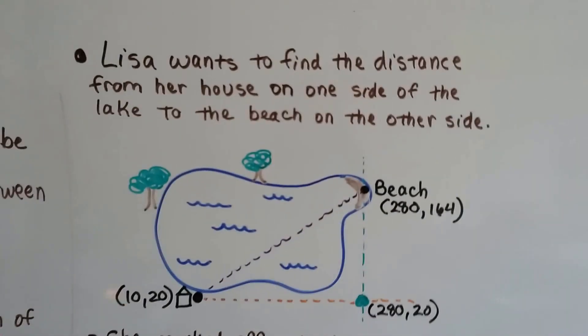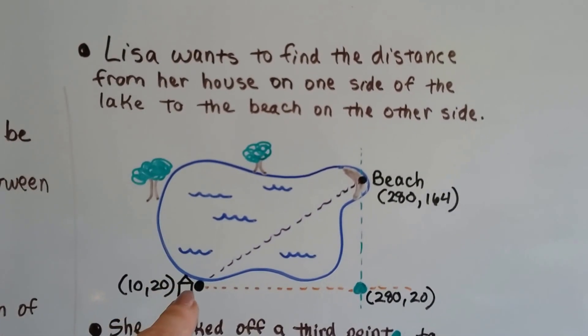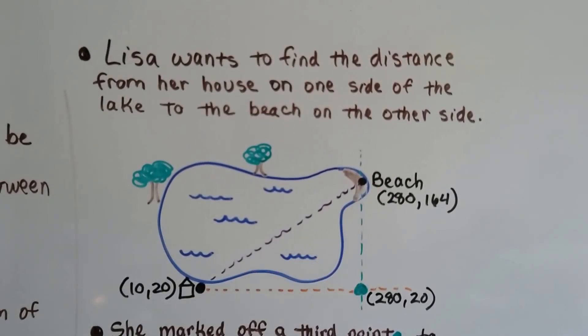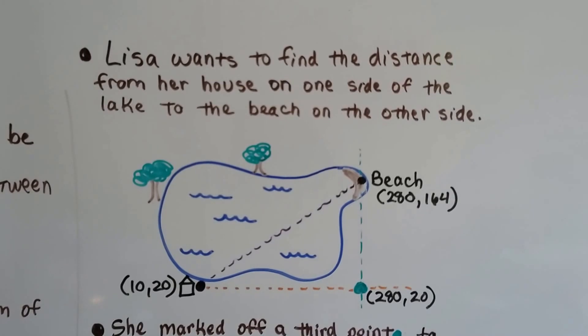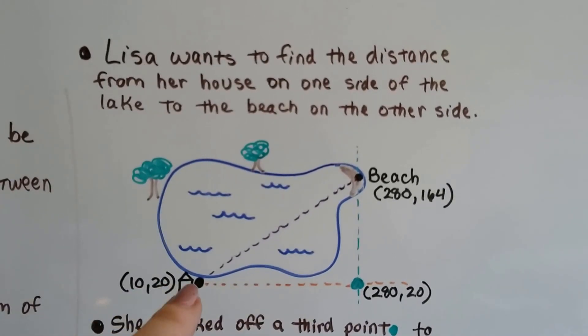So, Lisa wants to find the distance from her house on one side of the lake, down here, to the other side of the lake, to the beach. We've got the coordinates of 10, 20 for her house.